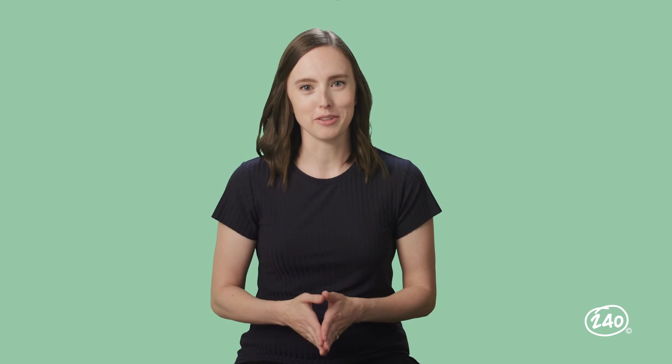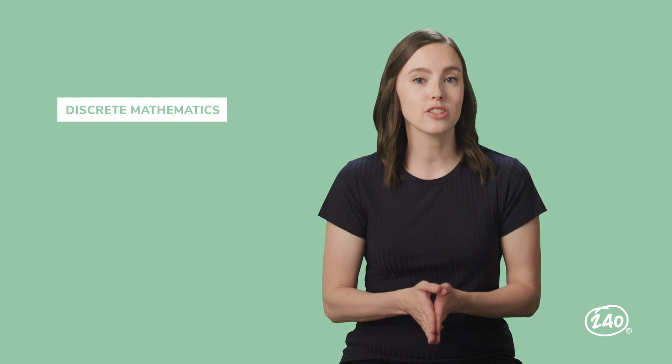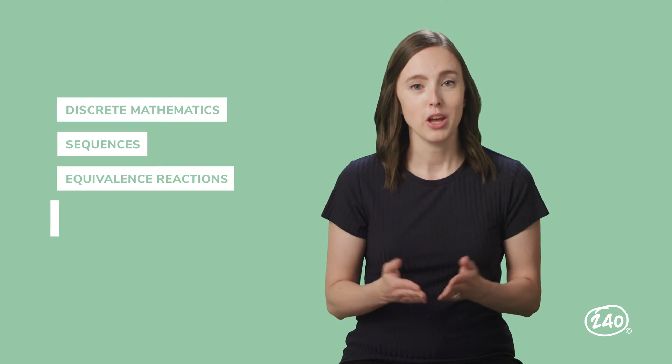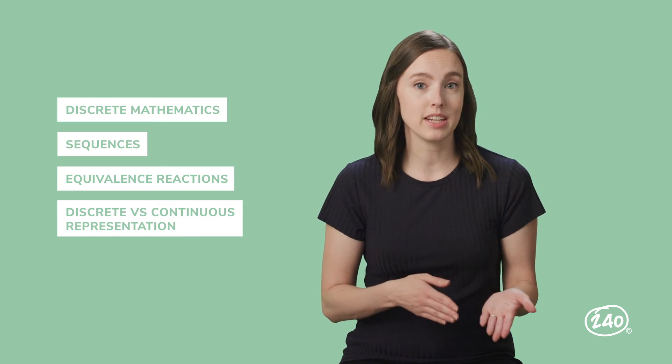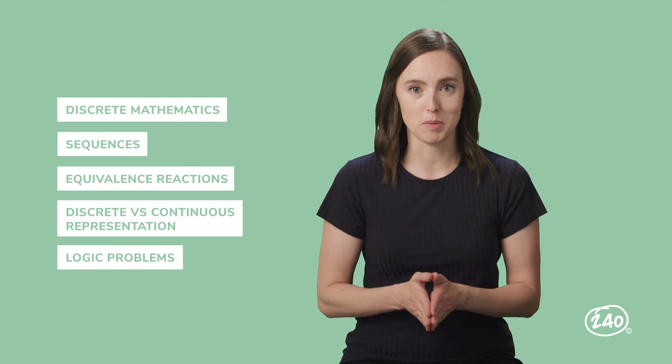If you want to practice some problems on your own, you need to check out our study guide. There's a link right below this video for you. Last subcategory before we do practice problems together, discrete mathematics. In this last section, you're going to need to understand the different types of sequences and equivalence reactions. You'll also need to know the difference between discrete and continuous representation, and to understand the basic terminology of logic problems.